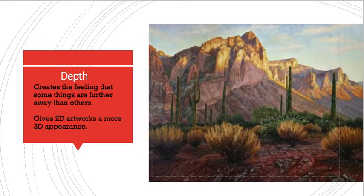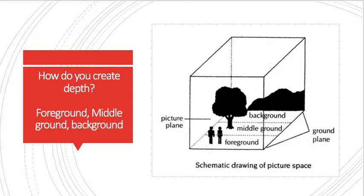Depth, you should be writing down the vocabulary for this, it creates the feeling that some things are further away than others. So it gives a 2D artwork a more 3D appearance. It's not so flat. And there's some things that are important, not only the parts of one-point perspective, but foreground, middle ground, and background are also important in creating depth in an image. Background is going to be the area in the artwork that is farthest away from the viewer, so your viewer would be up here. Foreground is going to be up towards the front, as close to the front of the artwork as you can get, and then the middle ground is between those two.